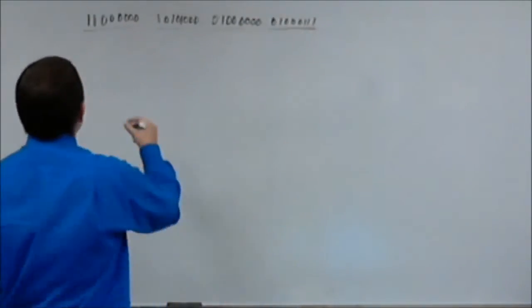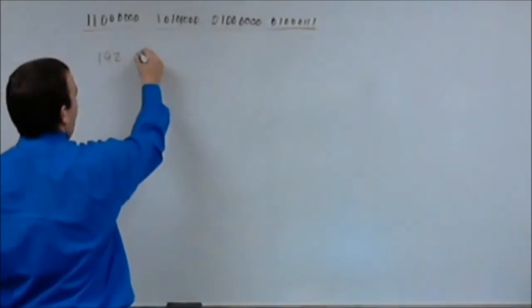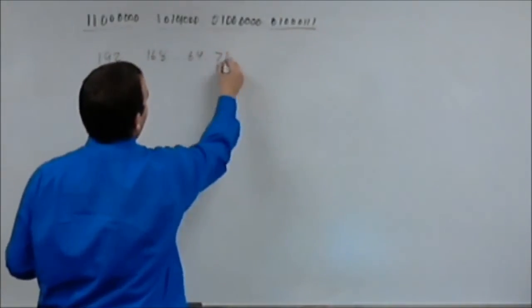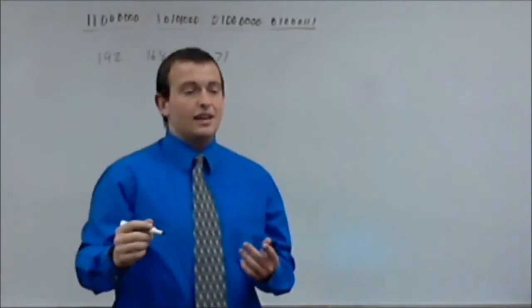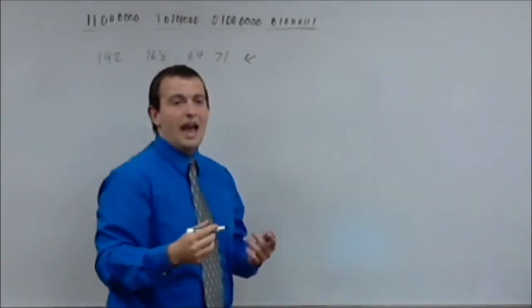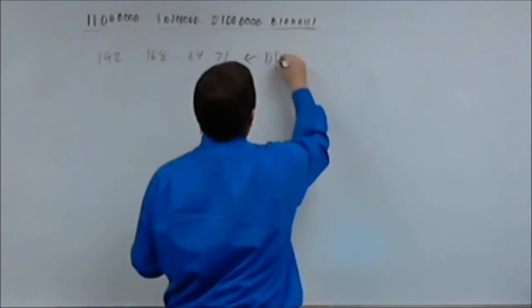Now, when we go to convert this, this would be 192 dot 168 dot 64 dot 71. Now, this representation right here is what we know as dotted decimal notation or DDN.